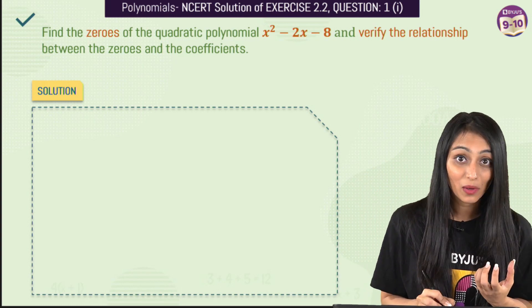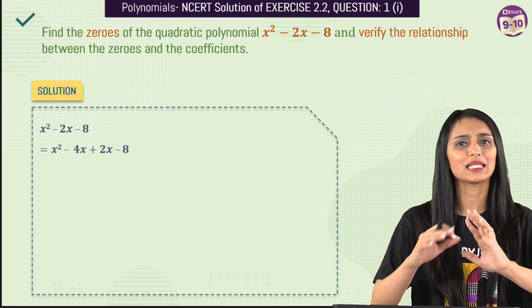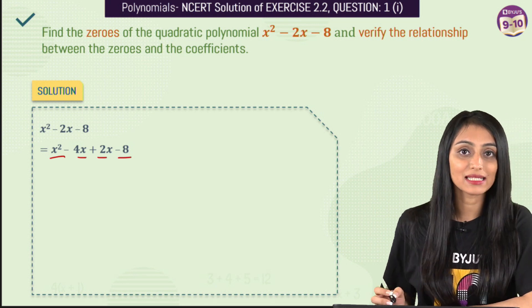So this is a quadratic polynomial, all we have to do is just the middle term splitting of this. Middle term splitting is very simple, we all know how to do this. That's going to be x squared minus 4x plus 2x minus 8.